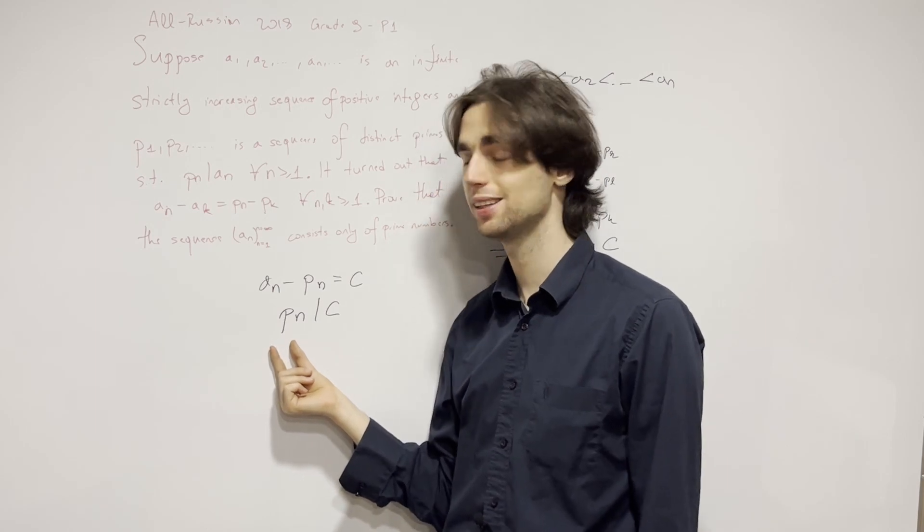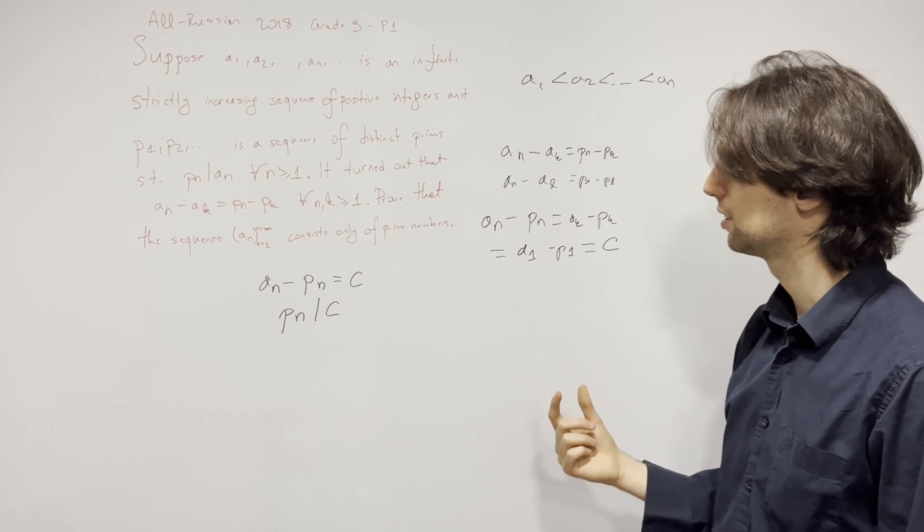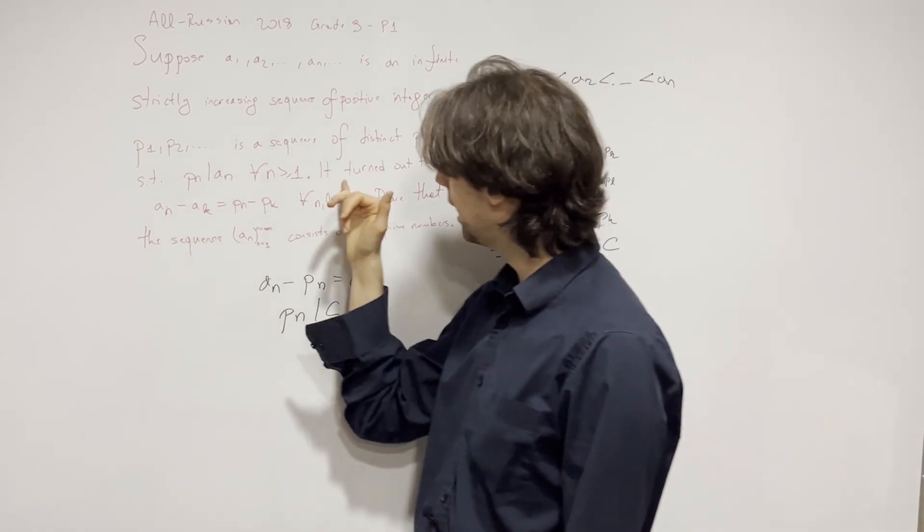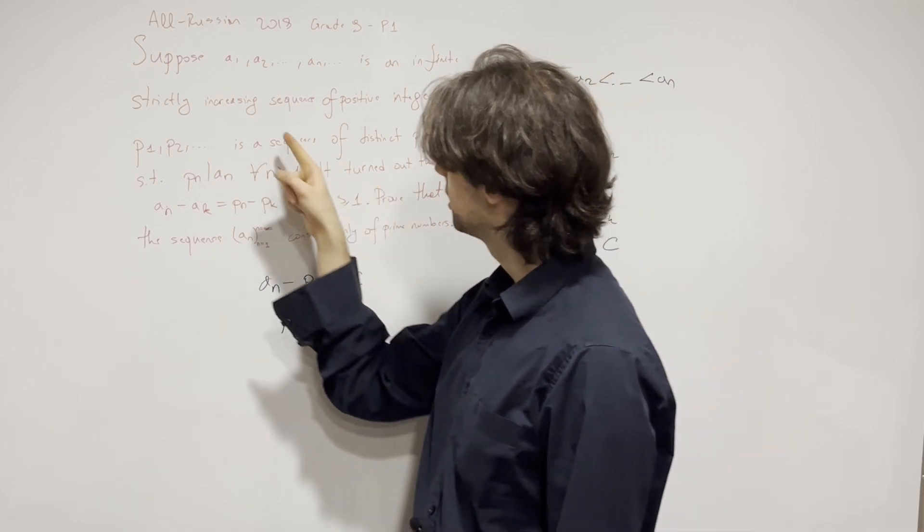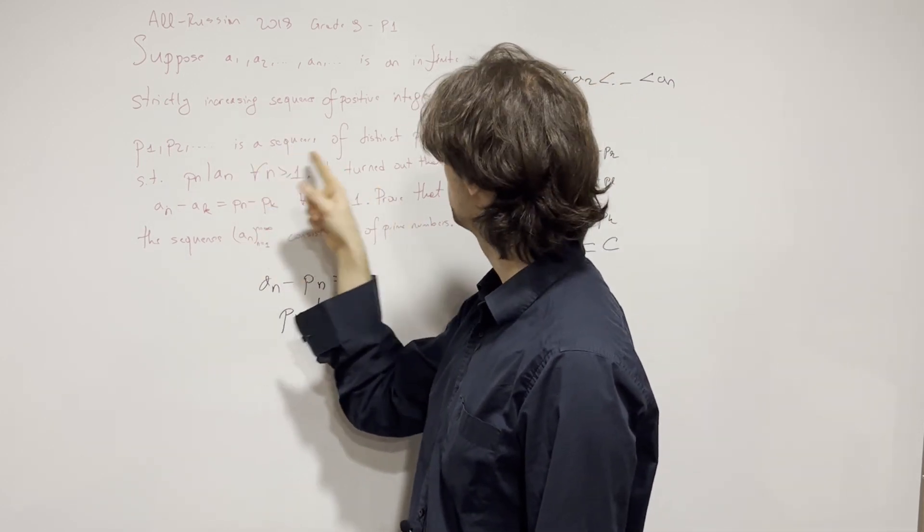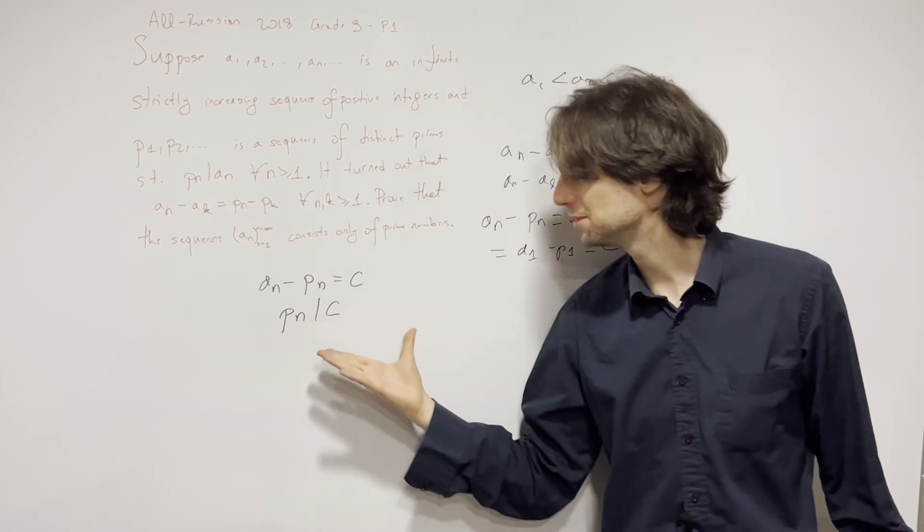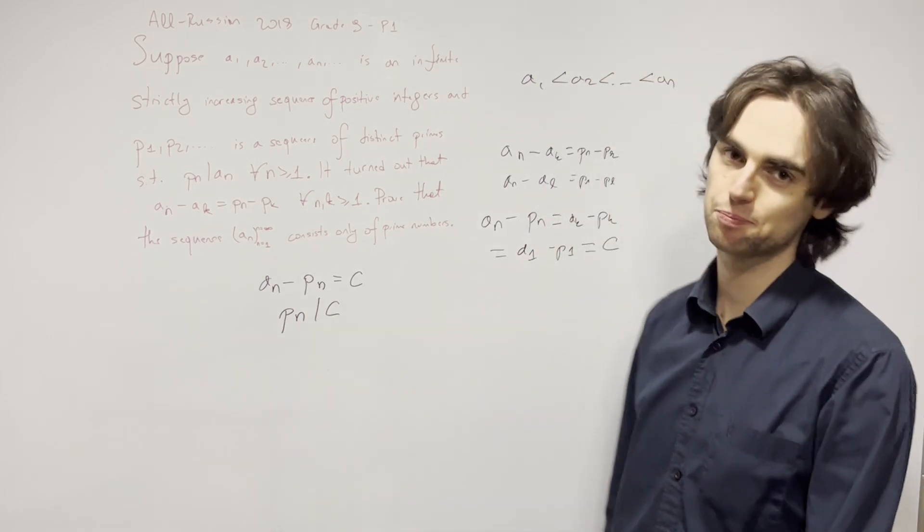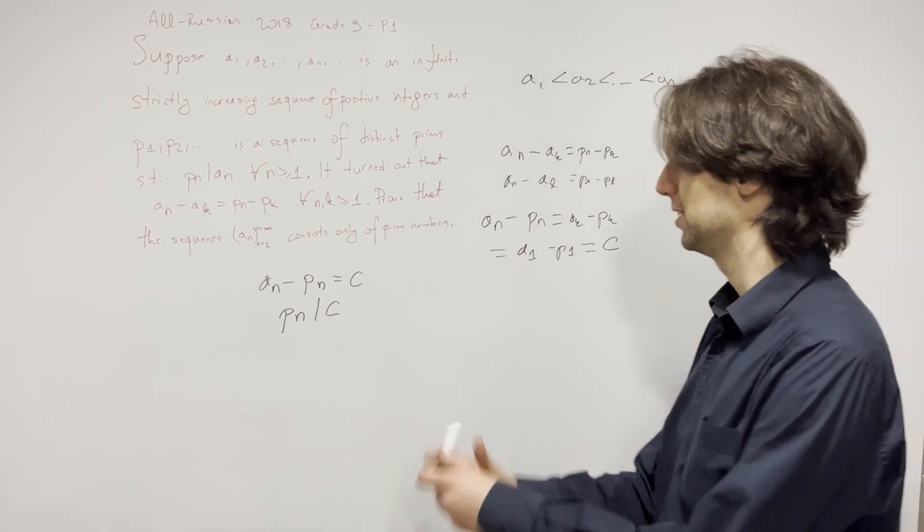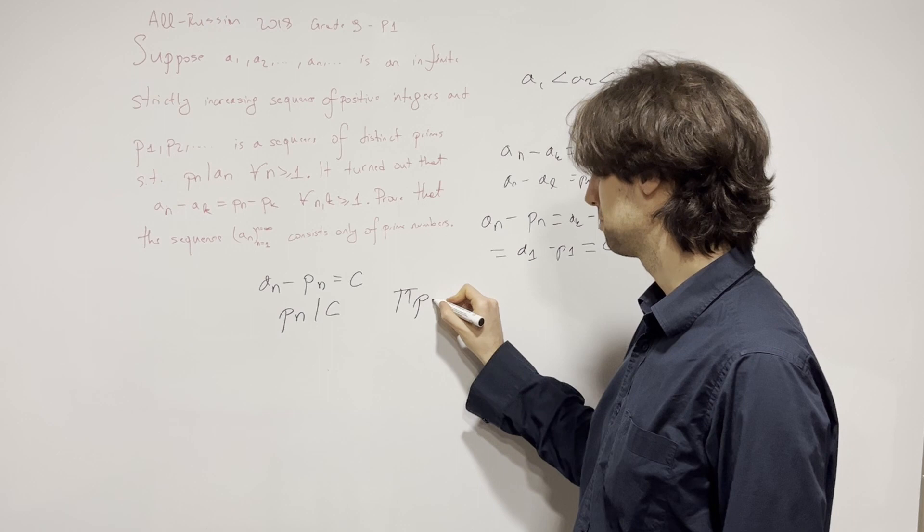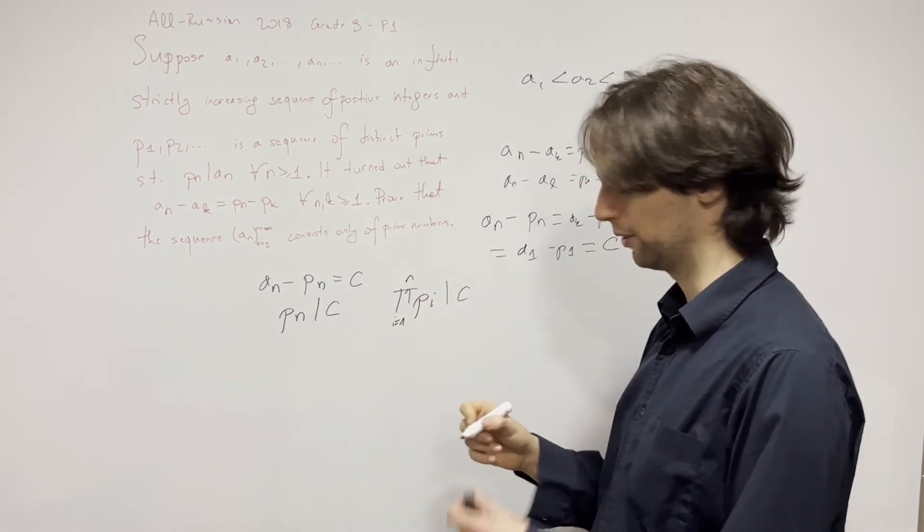Could p always be two? No, because p has to be distinct. It says this is a sequence of distinct primes. So we have n distinct primes all dividing c, which means the primes are relatively prime.